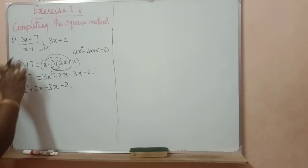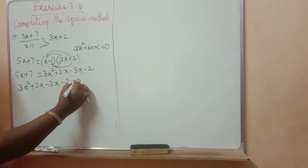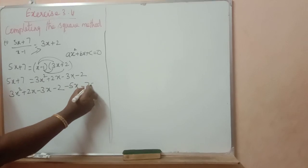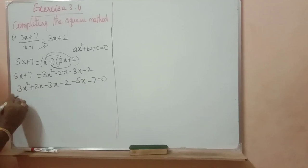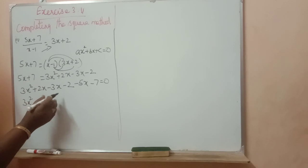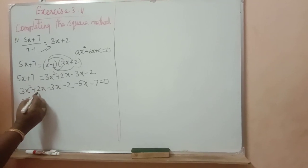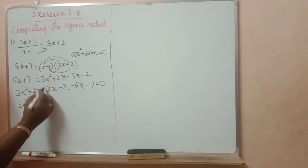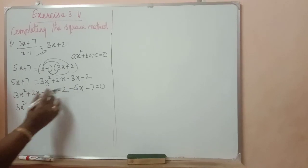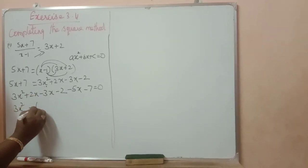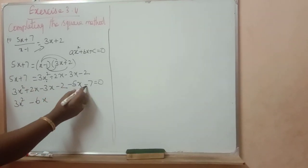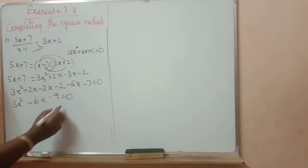Bring all these terms here and bring 5x plus 7 to the right-hand side as negative. So, 3x square plus 2x minus 3x minus 2 minus 5x minus 7 is equal to 0. x square: only one term, 3x square. Then x terms: 2x minus 3x is minus x, minus x minus 5x is minus 6x. Then constant: minus 2 minus 7 is minus 9.